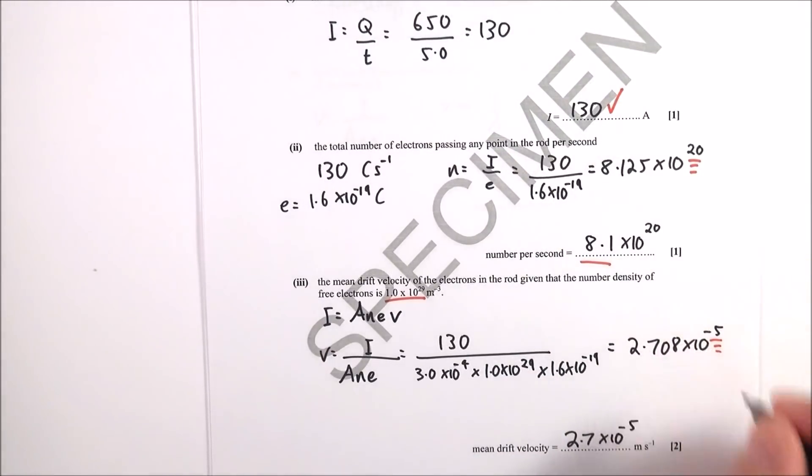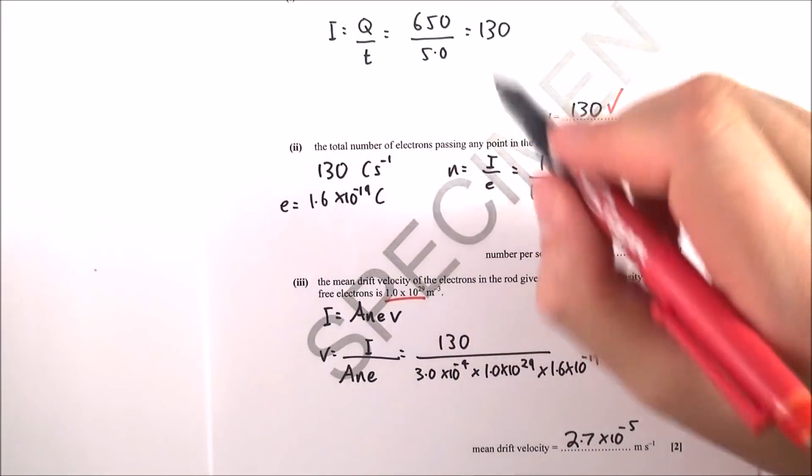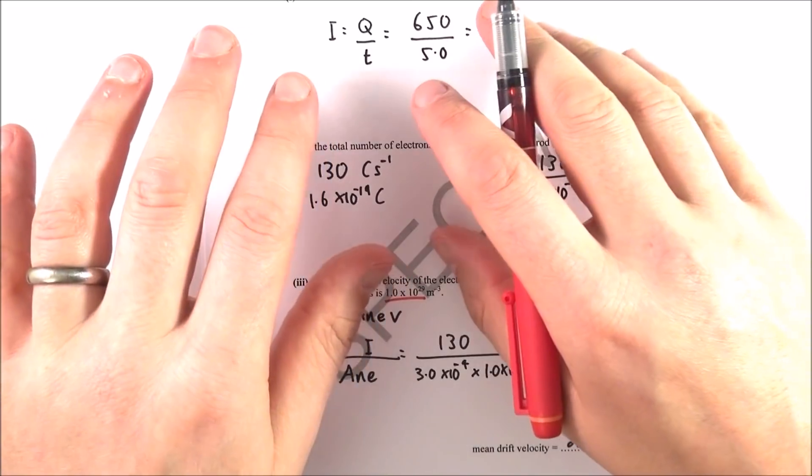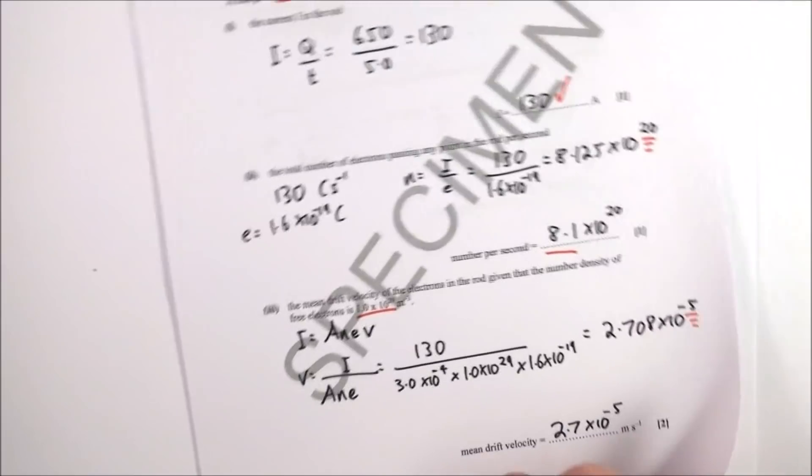This is incredibly slow, but the drift velocity of the electrons is actually very, very slow. Although they might be moving quickly, how quickly they move along that wire is incredibly slow, and therefore the mean drift velocity is 2.7 times 10 to the minus 5 meters per second.